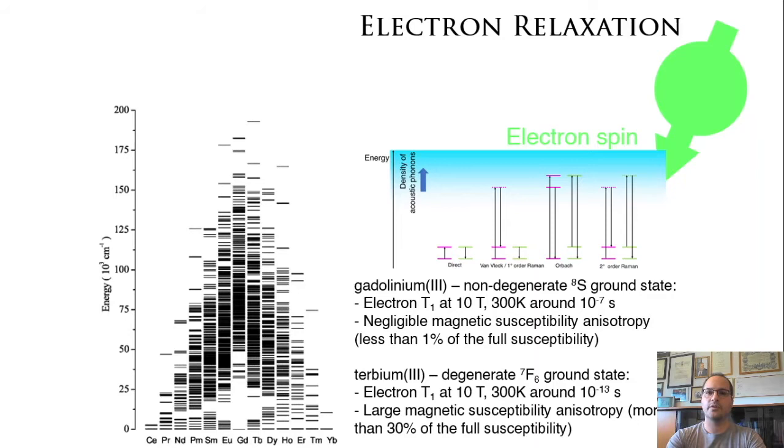On the contrary, terbium, with its degenerate 7F6 ground state, the electron T1 drops to the order of 10 to the minus 13 seconds, and the magnetic susceptibility anisotropy can be as large as 30% or more of the full susceptibility because of the presence of low-lying excited states.